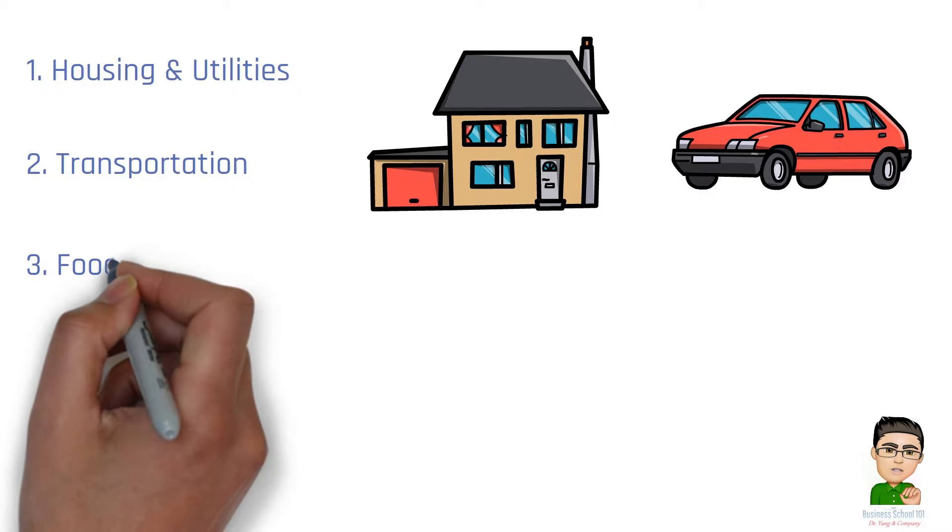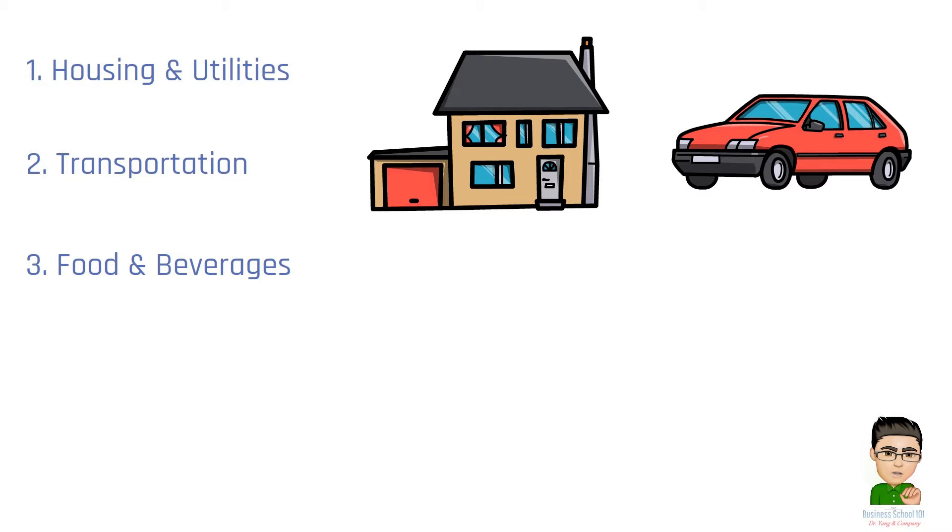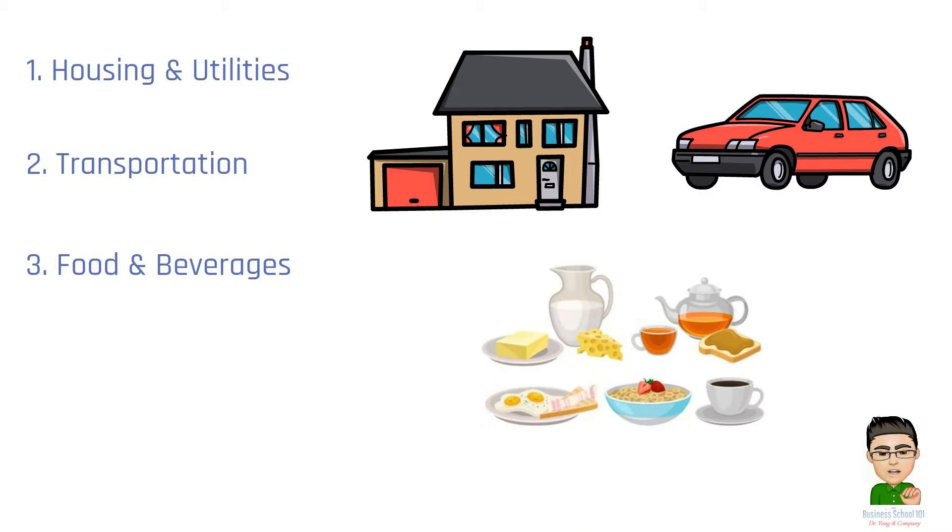Number 3. Food and Beverages. It typically includes a variety of food items such as grains, meats, dairy products, fruits, vegetables, processed foods, as well as non-alcoholic and alcoholic beverages.